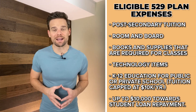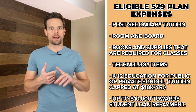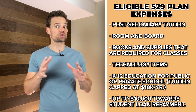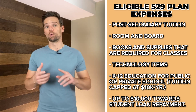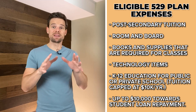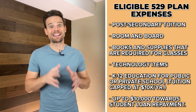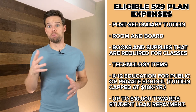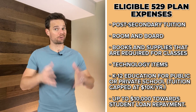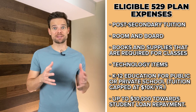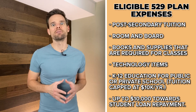There are a number of qualified 529 plan expenses, including post-secondary tuition. This includes college, university, trade schools, vocational programs, and registered apprenticeship programs. Room and board — only if paid directly to the college or university and the student is attending at least half-time. Also, books and supplies required for classes. Technology items like computers, printers, laptops, and even internet service required for school.